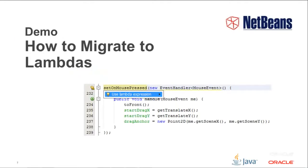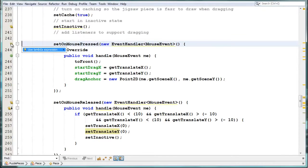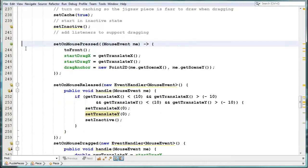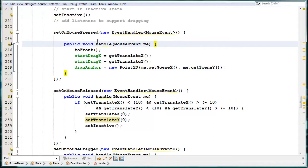In the IDE, converting anonymous inner classes to lambda expressions is easy. The IDE automatically identifies them in your code. Click the light bulb, or press the related keyboard shortcut, and then press enter on the Java hint that appears. The IDE will do the rest to convert the structure to a lambda expression for you. Notice that here we have an anonymous inner class, that the hint shows us we can convert this to a lambda expression, and that if you put the cursor inside the lambda expression, we can switch back to an anonymous inner class.